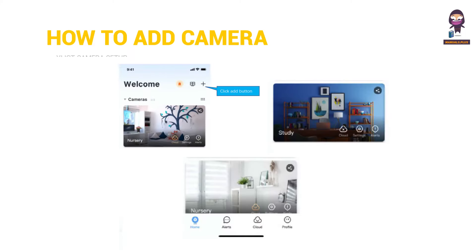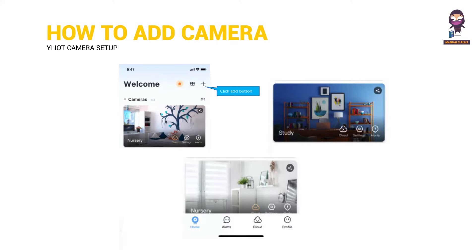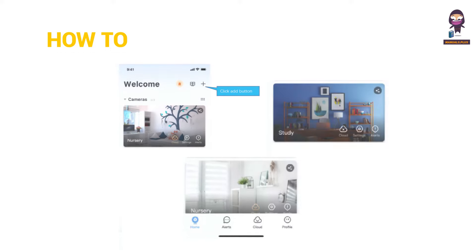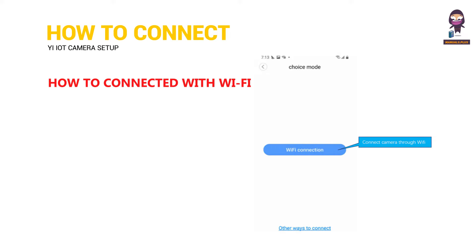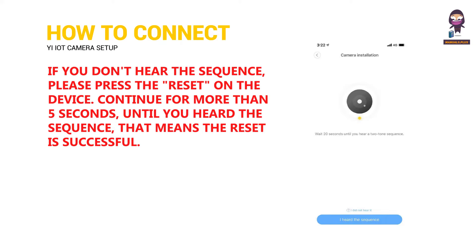How to add a camera. How to connect it with Wi-Fi. If you do not hear the sequence, please press the reset button on the device and hold it for more than 5 seconds, until you hear the sequence — that means the reset is successful.